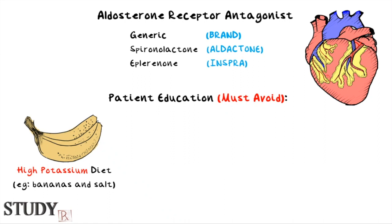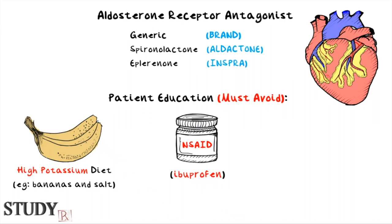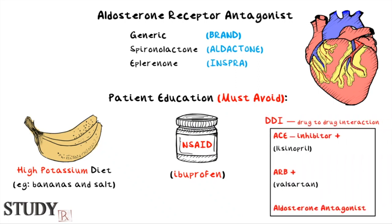Second, avoid NSAIDs like over-the-counter ibuprofen. NSAID stands for non-steroidal anti-inflammatory drugs. Third, avoid the combination of ACE inhibitors like lisinopril, angiotensin receptor blockers such as valsartan, and aldosterone receptor antagonists like spironolactone, because they may have a serious reaction when taken together, which we'll discuss shortly.